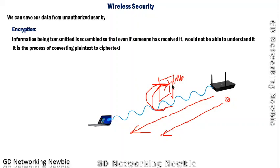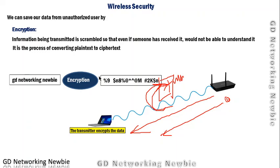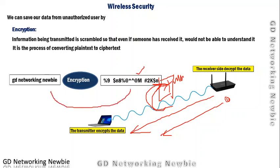Encryption is the process of converting plaintext to ciphertext. For example, the message I want to transmit is encrypted using a mathematical algorithm, changing it into something unreadable. On the transmitter side, data is encrypted; on the receiver side, data is decrypted. The receiver knows the algorithm, applies the decryption algorithm, and recovers the original message. The receiver knows the key to unlock the message.